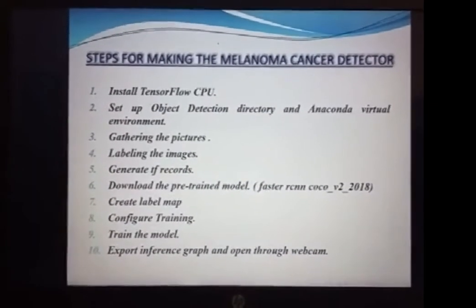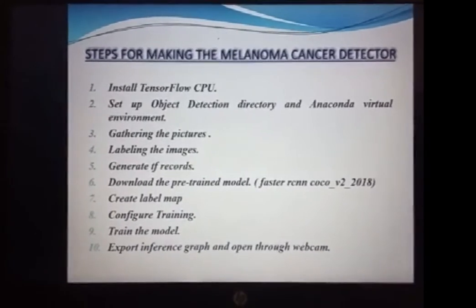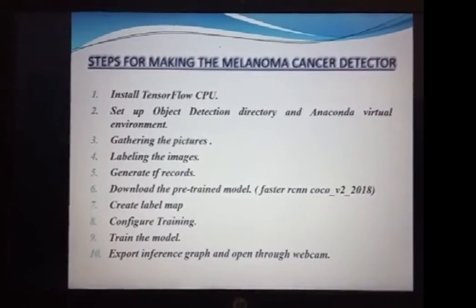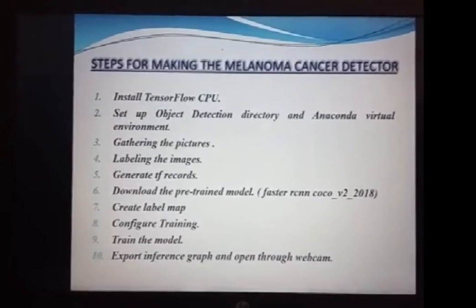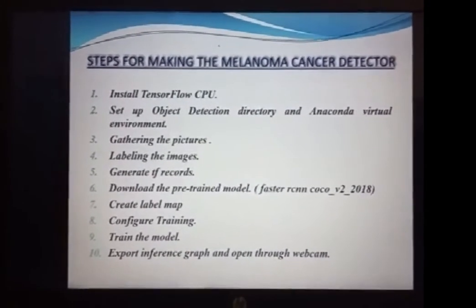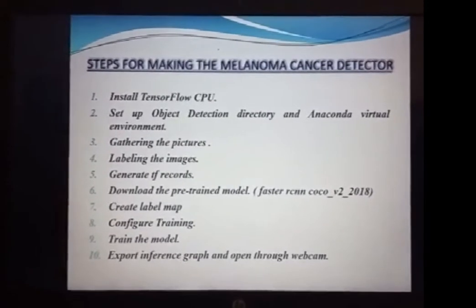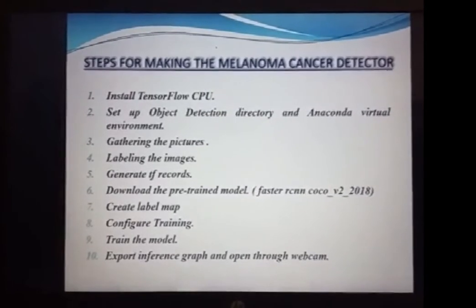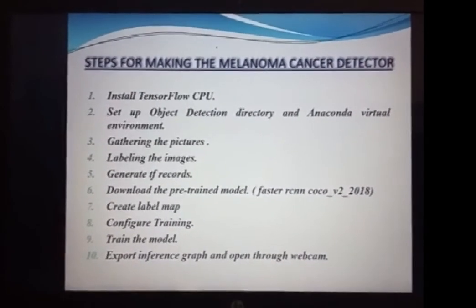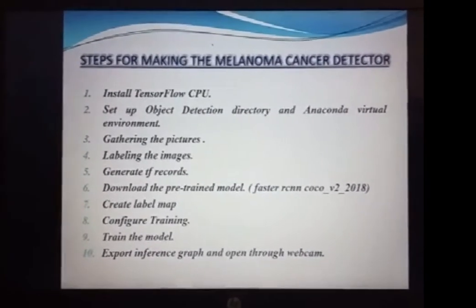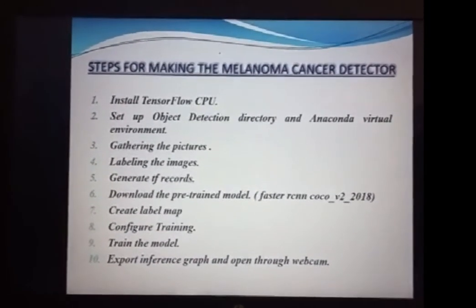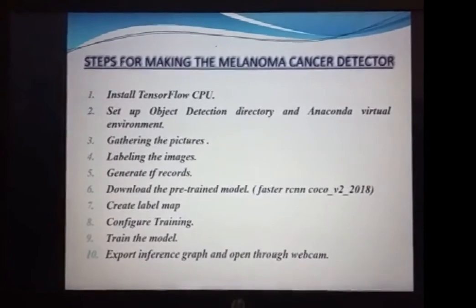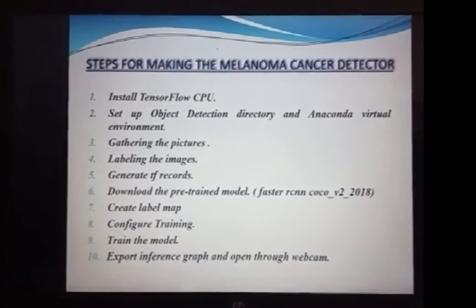After generating the TensorFlow records, we downloaded our pre-trained model, which is the most important thing for our project — the Faster RCNN COCO V2 2018, downloaded from the GitHub repository. After that, we created a label map in which we set up the number of classes to detect and their names. Finally, we edited the pipeline.config file which comes with the pre-trained model, and after editing, we started training our model.